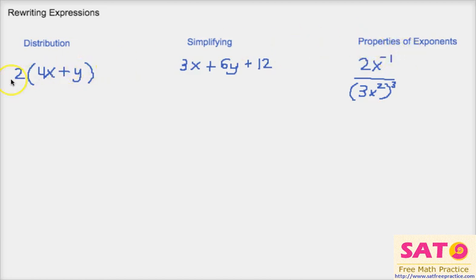So let's get started. Our first problem is 2(4x + y). Now distribution is the property that allows a number to be distributed to all numbers inside a parentheses. So we could use the distribution property to multiply 2 by 4x and by y.